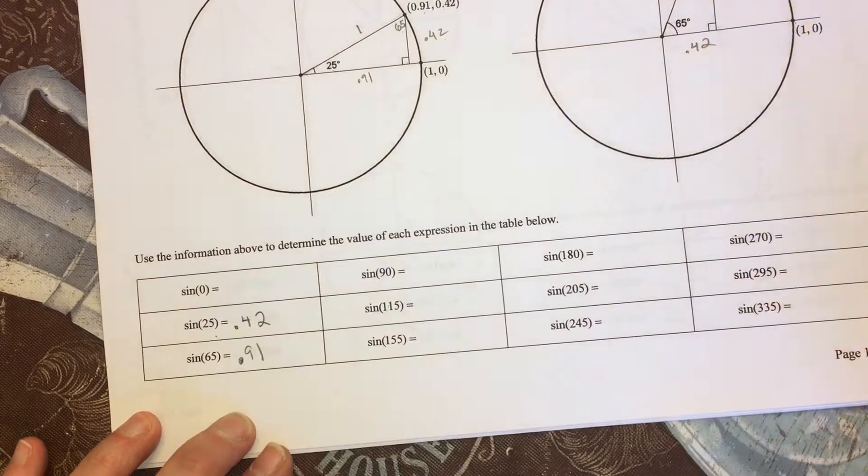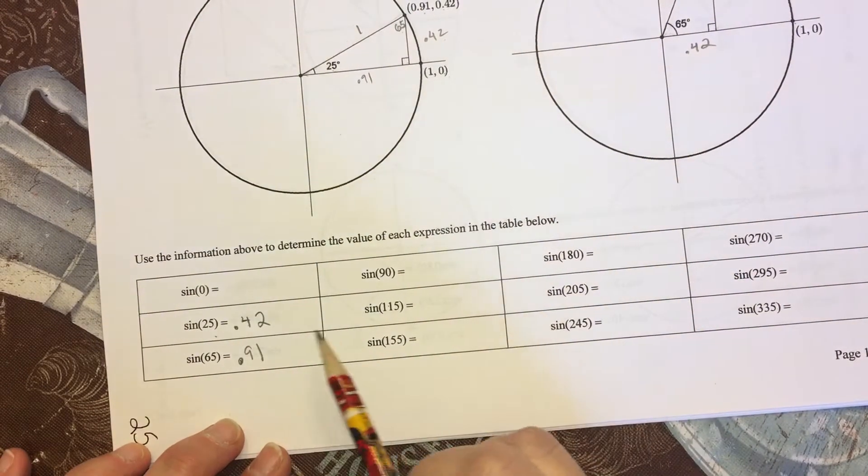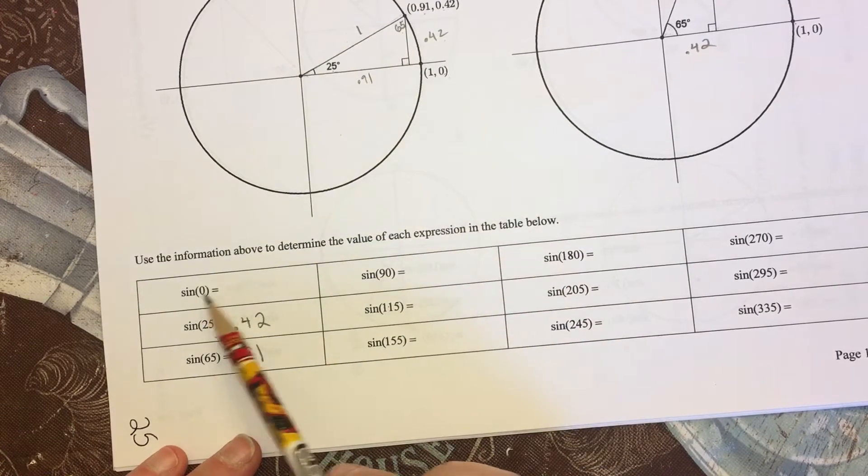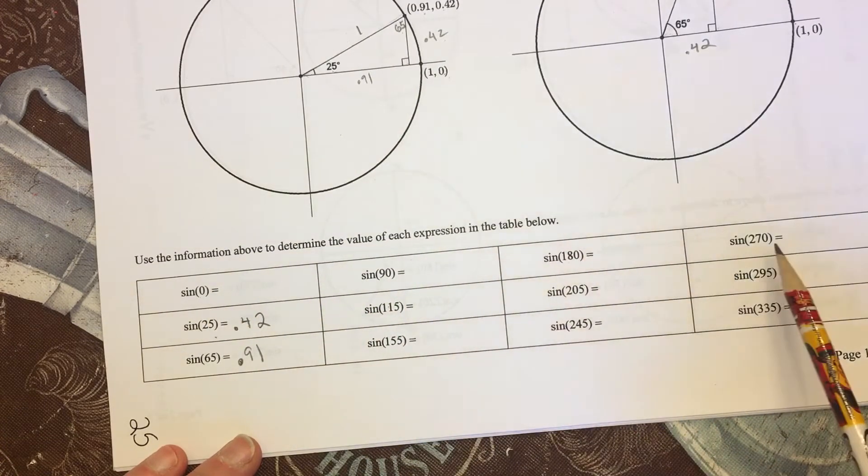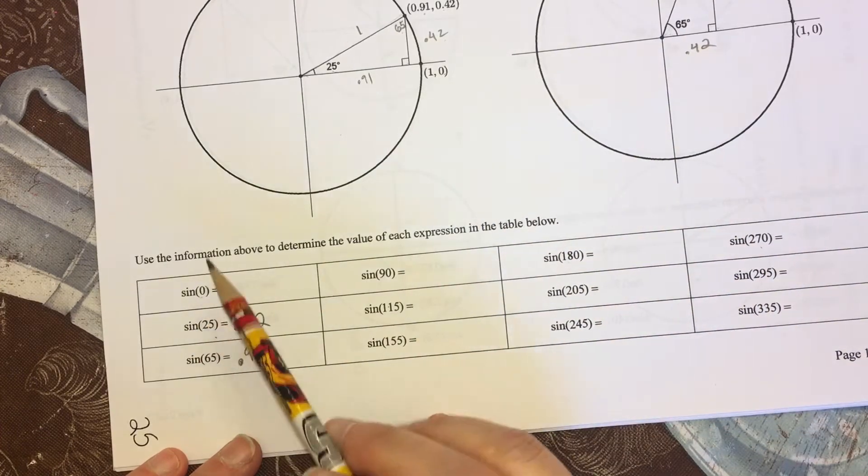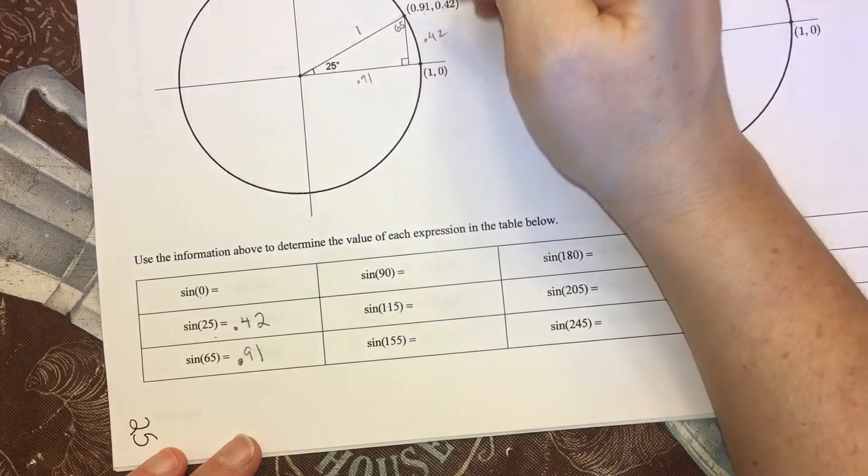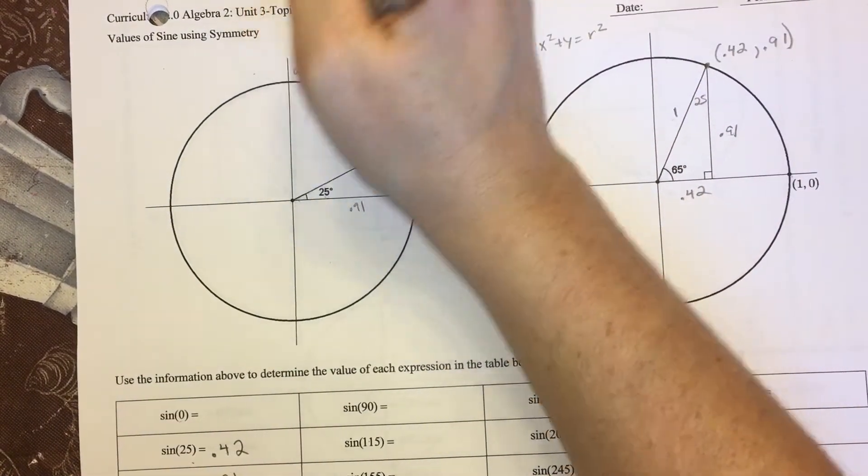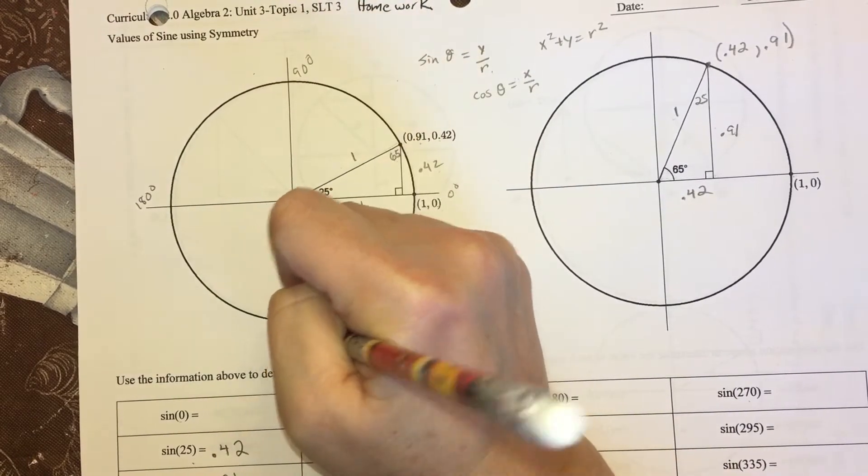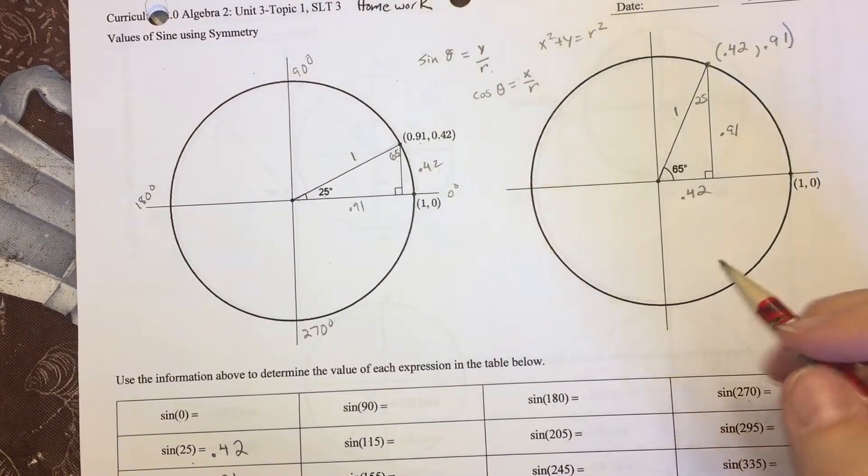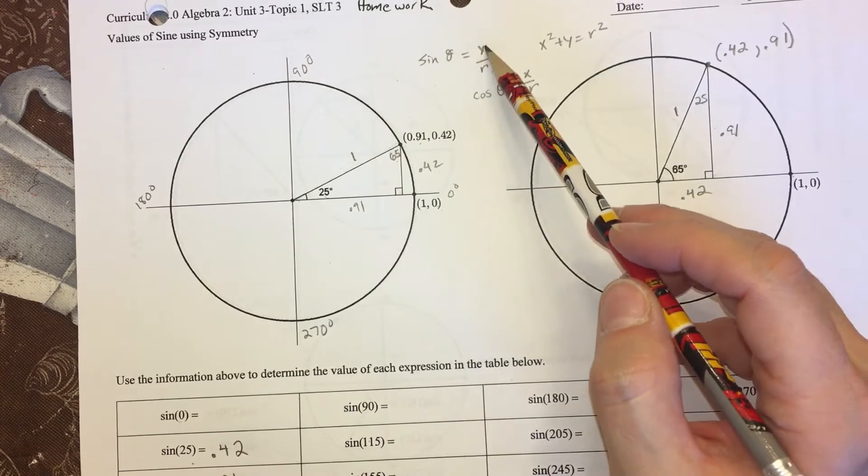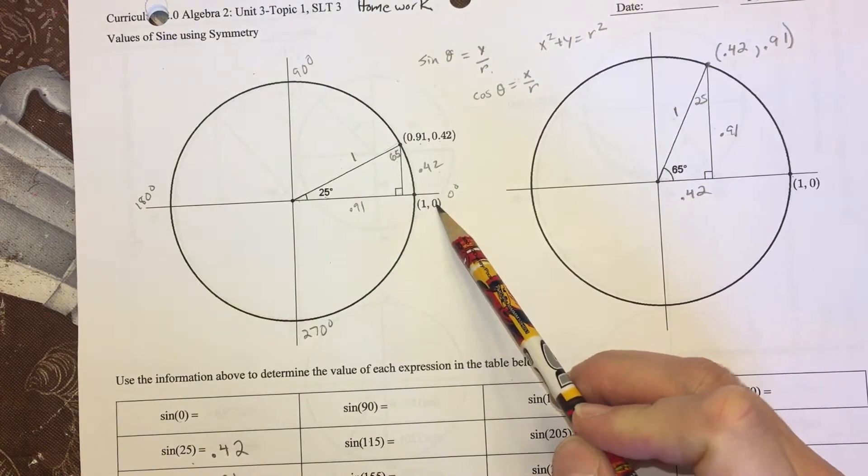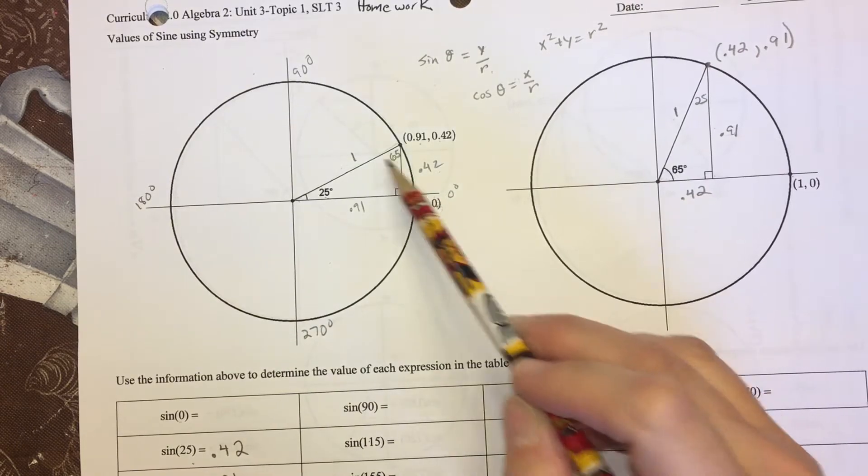Okay, so continuing on. I see that my top row here—these are all my quadrantal angles. I call them quadrantal angles because 0 degrees falls here, 90 degrees falls here, 180 and 270. Even though I can't draw triangles at these angles, I can still use y over r. Think about it: at 0 degrees, what's the y value? 0. 0 divided by 1 is just 0.